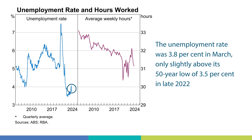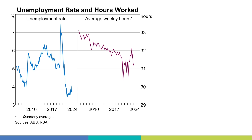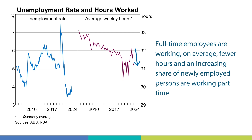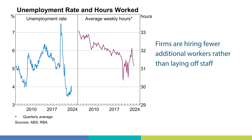Indicators of labour supply such as the participation rate and the employment-to-population ratio also remain near record high levels. So what labour market indicators are easing the most? The first is that workers, on average, are working fewer hours. The maroon line in the right panel shows average weekly hours worked in the Australian economy — these have declined substantially over the past year, reversing the increase over 2022. The second indicator is that firms have reduced their demand for labour, more so by hiring fewer additional workers rather than laying off staff, as evidenced by the decline in job vacancies.